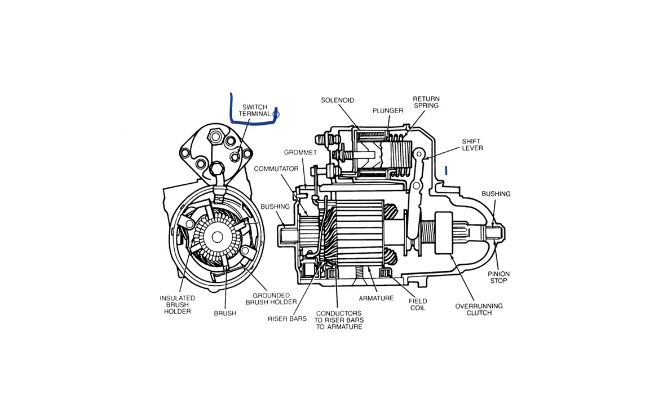So this is our switch terminal, this is where our wire would go to when we want to turn the key that would come from the ignition switch. And then we have this component right here, this is our solenoid. You can see it says solenoid right there. Inside of the solenoid we have the plunger.